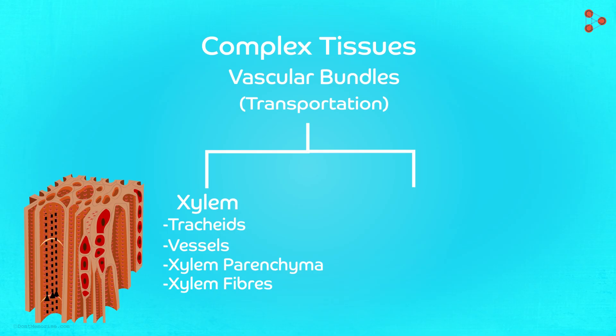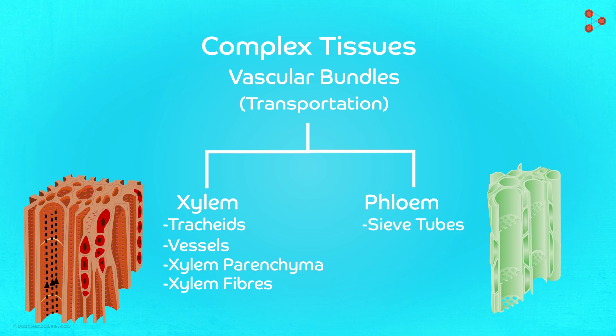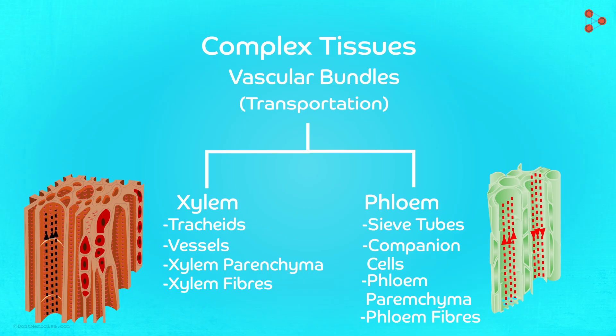Similarly, for the transport of food, we have the phloem to help the plant. It is also made up of four major types of cells: the sieve tubes, companion cells, phloem parenchyma and phloem fibres. The most unique characteristic of phloem is that it can pass the substances in both the directions.